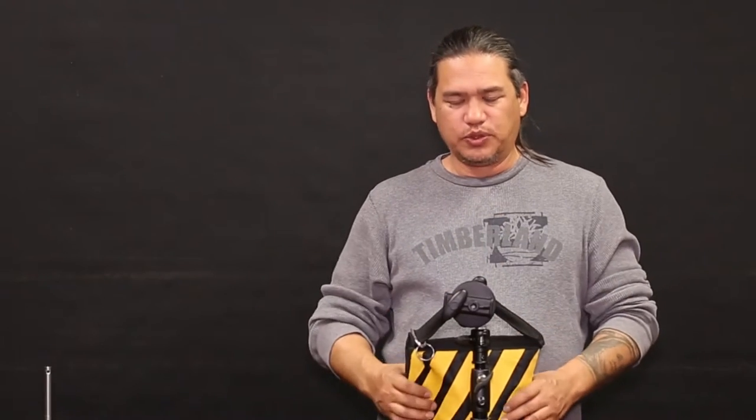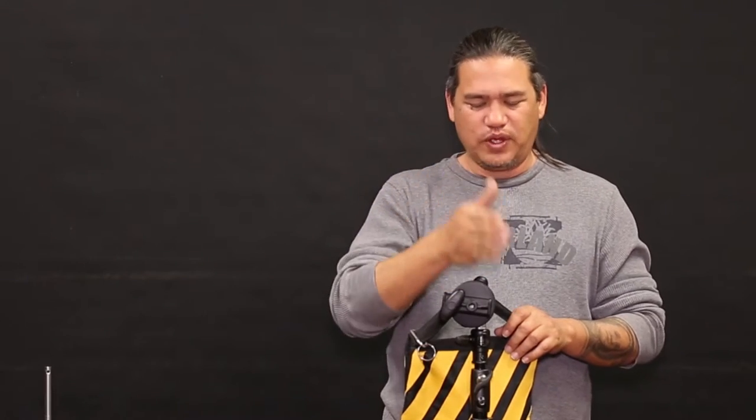It comes with this knuckle. This knuckle is used to mount the umbrella onto a stand. It also comes with the sandbag. These are two necessary things that you're going to need and that comes with this umbrella.